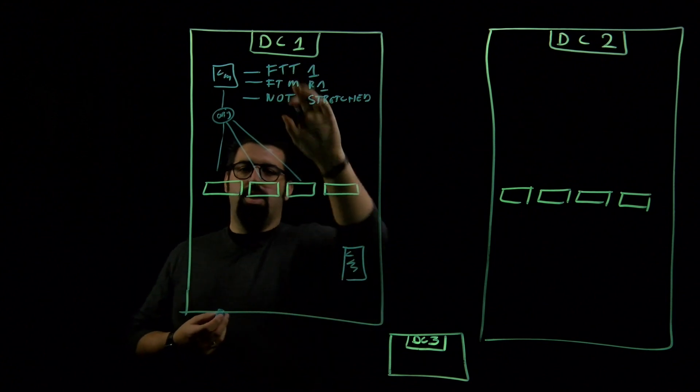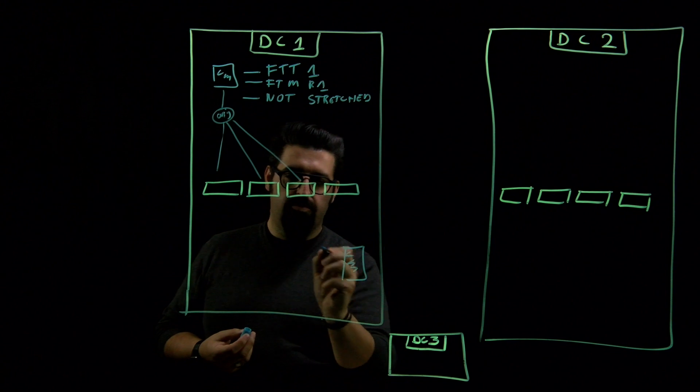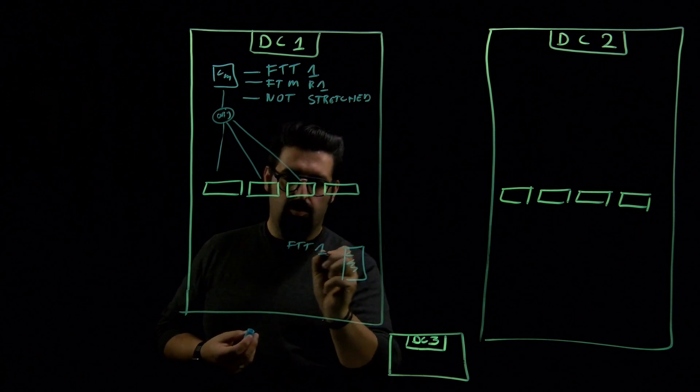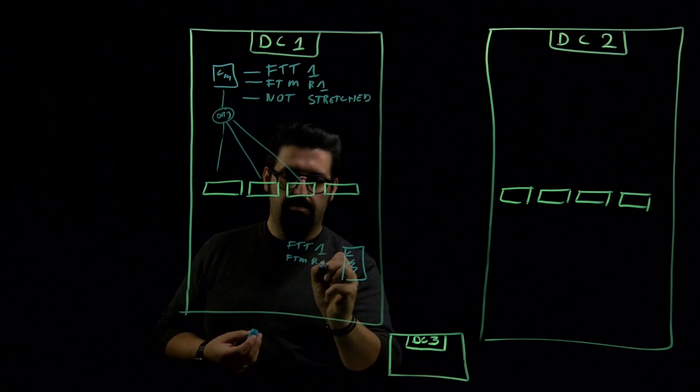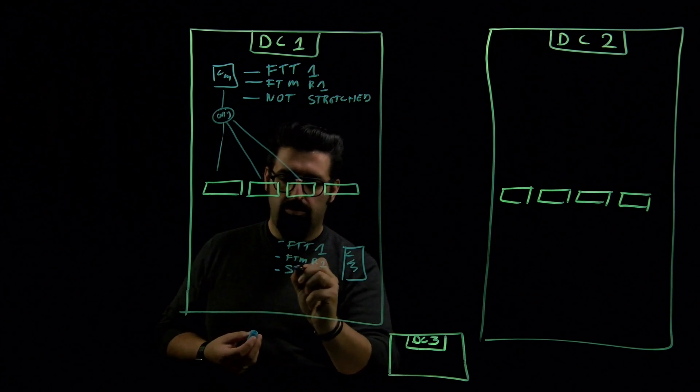This VM now I will create a new policy, I will attach a new policy to this VM. This VM has a FTT of 1, same. FTM of RAID1, same. But what we would do is we would stretch it.